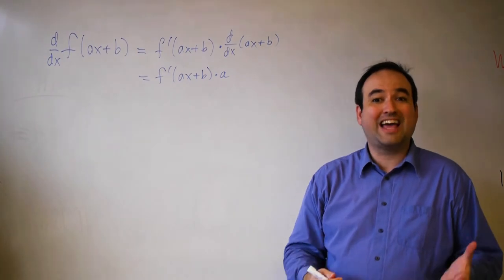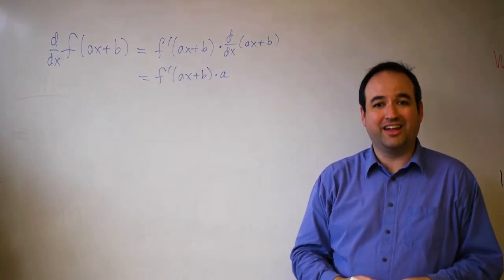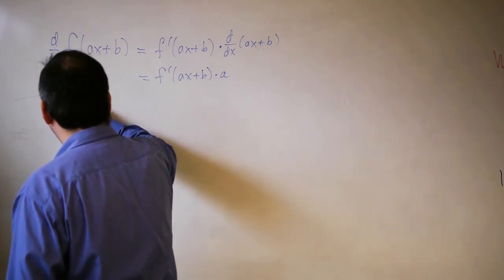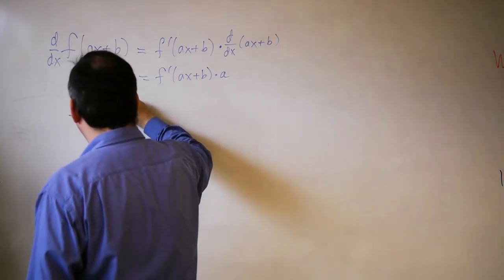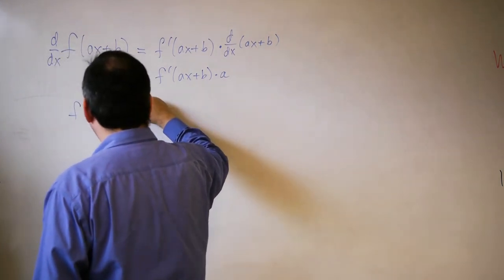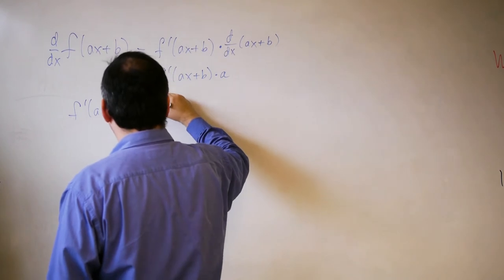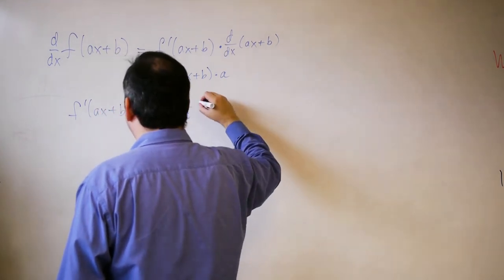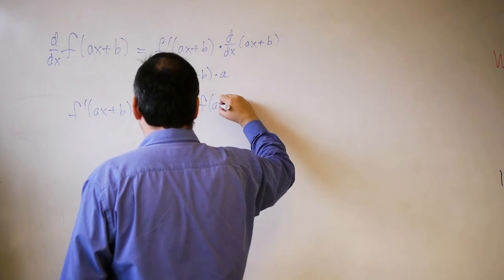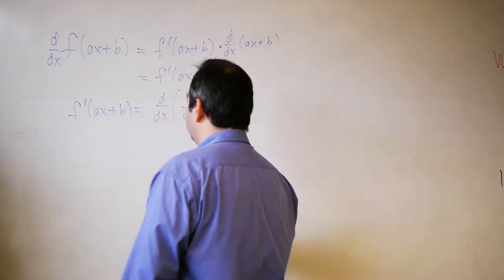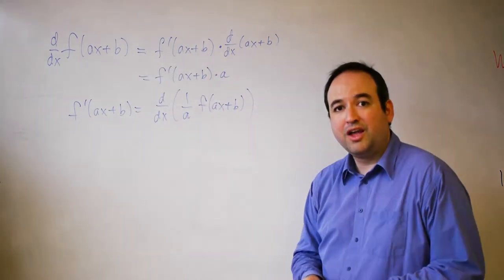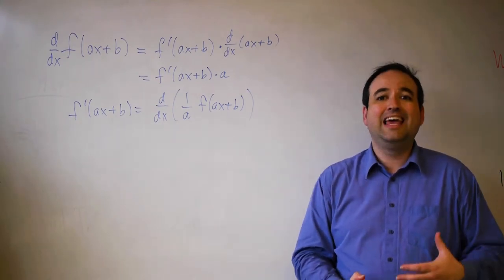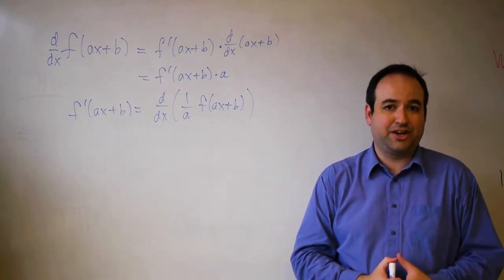Now I can bring that a back over to the other side. So we know that f prime of ax plus b equals the derivative with respect to x of 1 over a times f of ax plus b. Remember that you can bring multiplication or division by constants inside a derivative symbol.